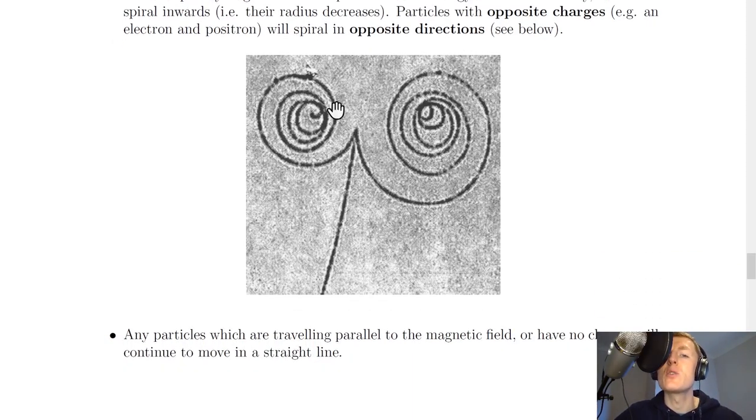So this picture here shows the electron spiral on the left and the positron spiral on the right, and this is actually an example of detecting antimatter with a bubble chamber, as positrons are antiparticles of electrons, and that means they have the same mass but opposite charge.